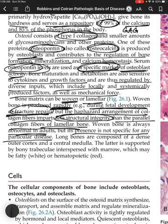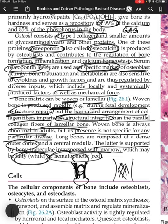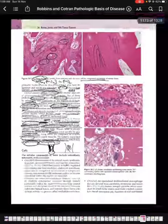Long bones are composed of a dense outer cortex and an inner central medulla. The medulla is supported by bony trabeculae interspersed with marrow, which may be fatty (yellow/white) or hematopoietic (red).